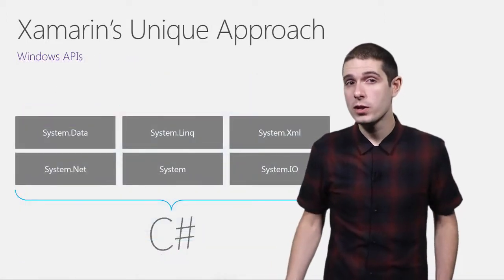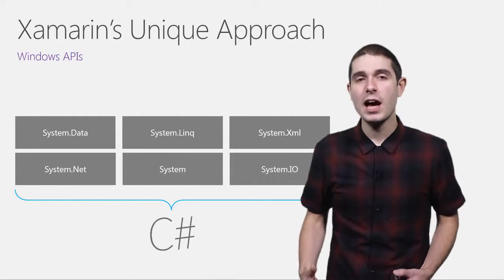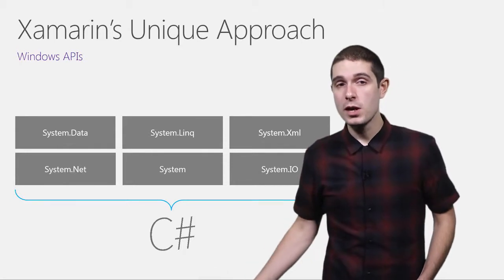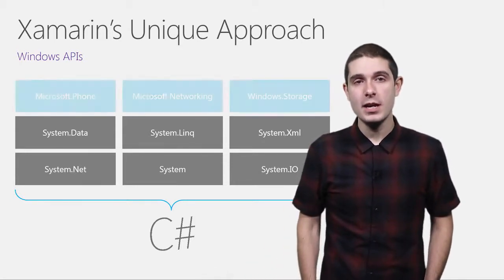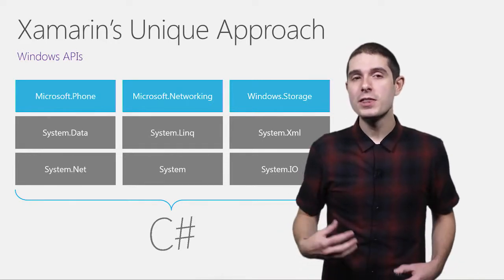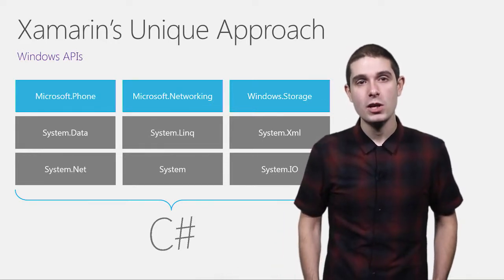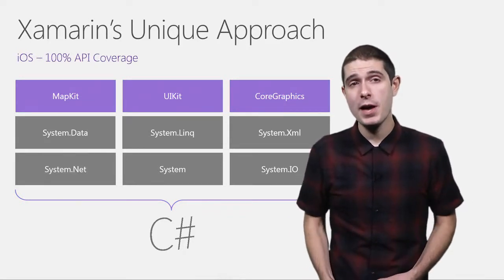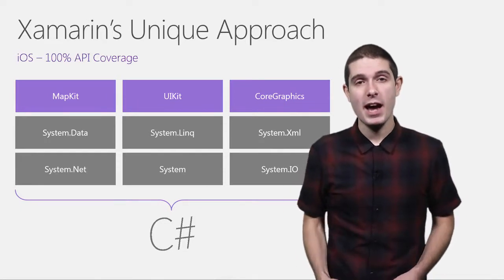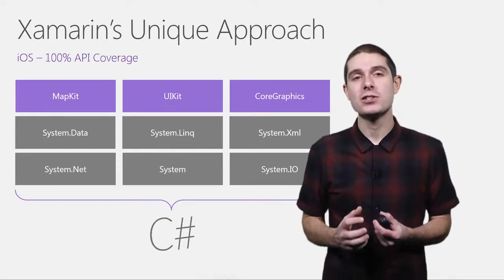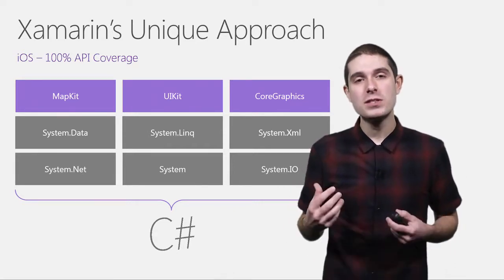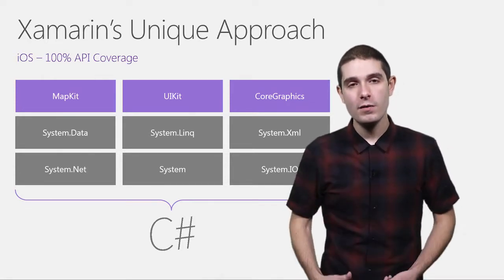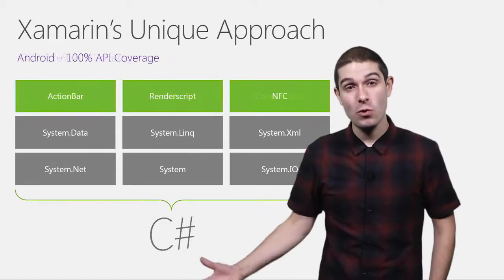If you're wondering how that looks, imagine today in the Windows world — you have amazing .NET libraries like System, LINQ, XML, and Net. When you want to go to UWP or any other Windows platform, you download an SDK and get some new APIs. You can think of it the same way when you go to iOS and Android with Xamarin. You get everything you know and love about .NET, but with 100% API coverage for every API in iOS and Android — C# bindings around MapKit, UIKit, with Async/Await, Lambdas, and LINQ support.